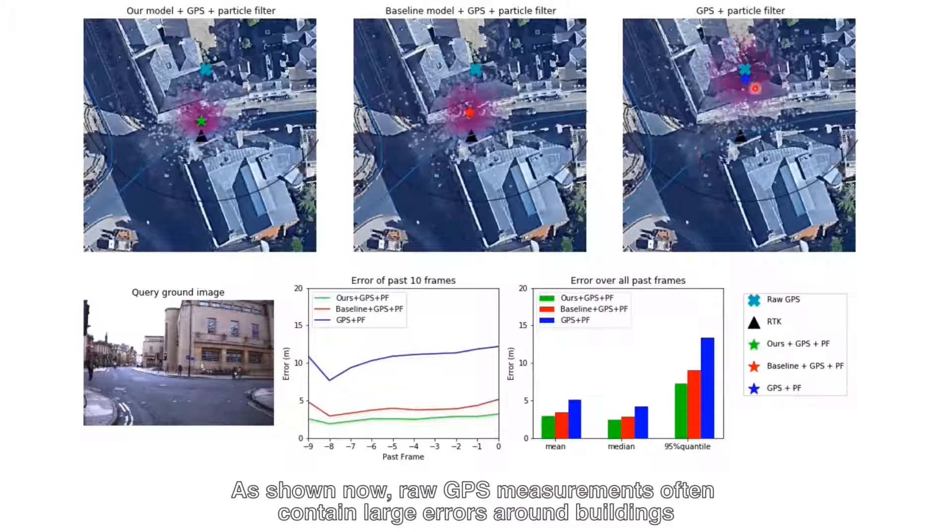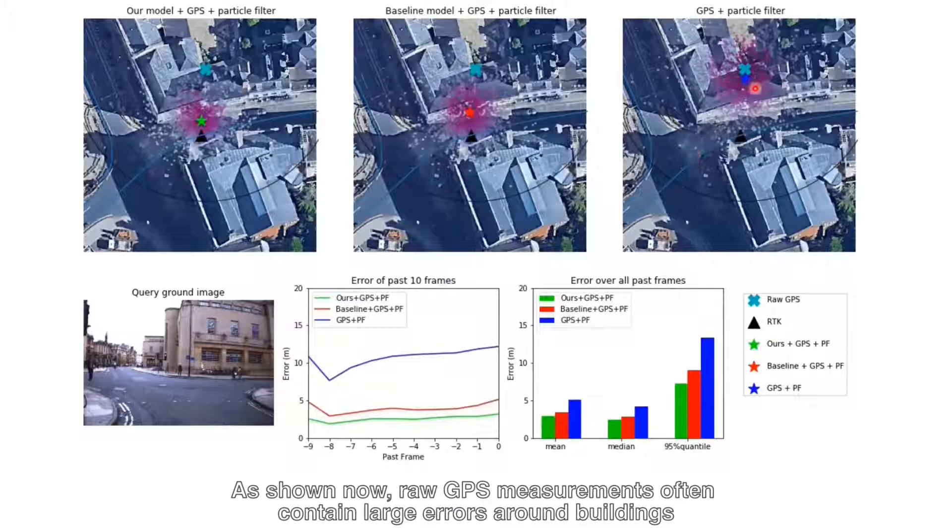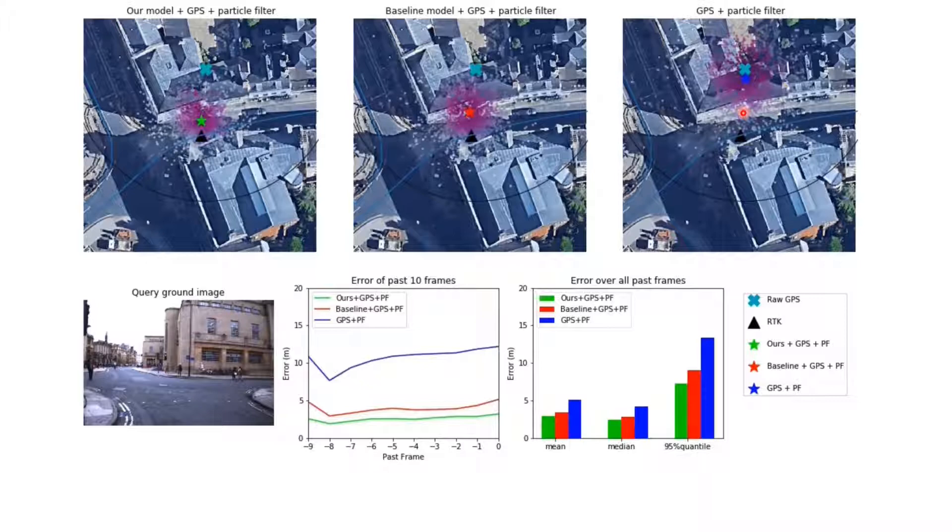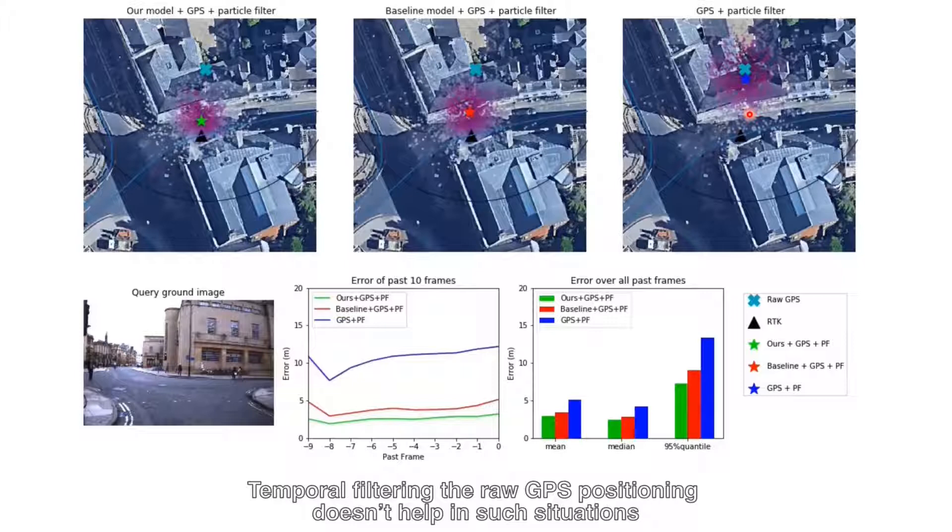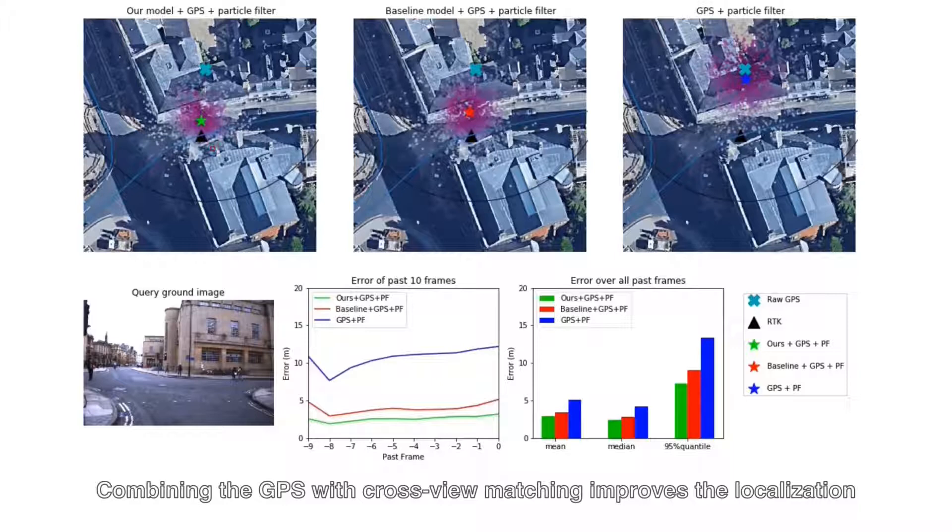As shown now, raw GPS measurements often contain large errors around buildings. Temporal filtering the raw GPS positioning doesn't help in such situations. Combining the GPS with cross-view matching improves the localization.